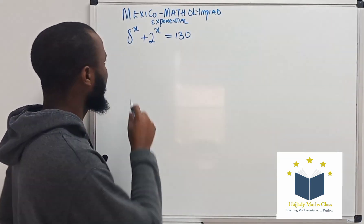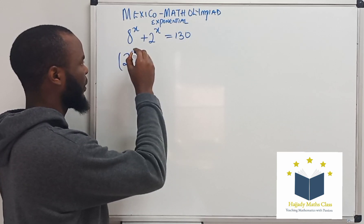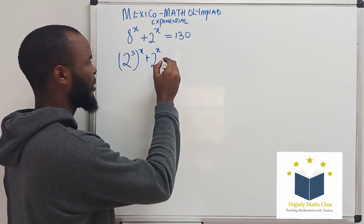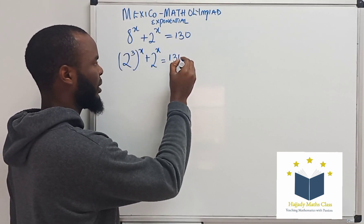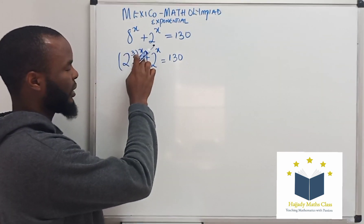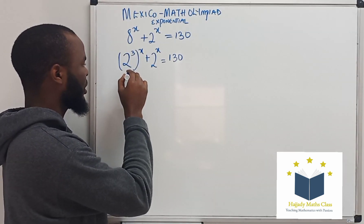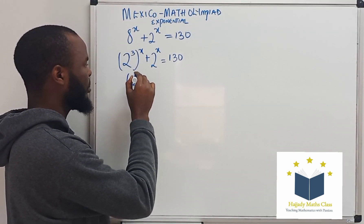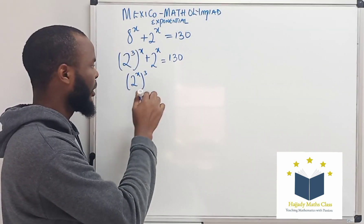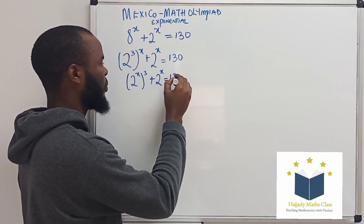Now simplifying this, my 8 can be written as 2 to the power of 3x, plus 2 to the power of x equals 130. Now, using the rule of indices, I can change the position of 3 and x. So this can be the same thing as 2 to the power of x, bringing my 3 outside here, plus 2 to the power of x equals 130.